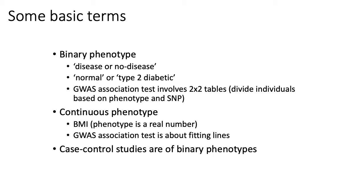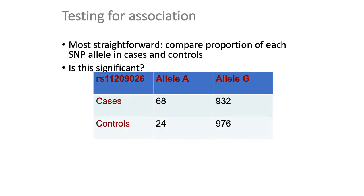We'll talk about what fitting lines means exactly, but we'll start with binary phenotypes because those are essentially what case-control studies are — and those are what you might classically think about when you think about genome-wide association studies. We already saw examples of how Fisher's exact test is done in the context of gene set enrichment analysis, so here I'll briefly go over it again in the context of genetics.